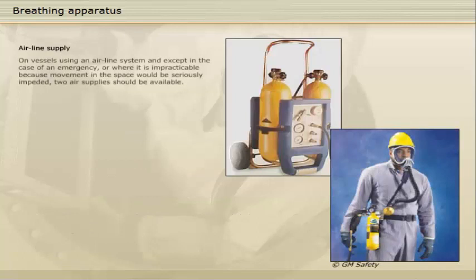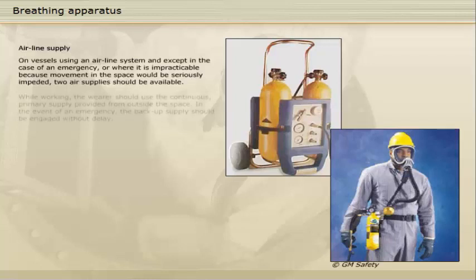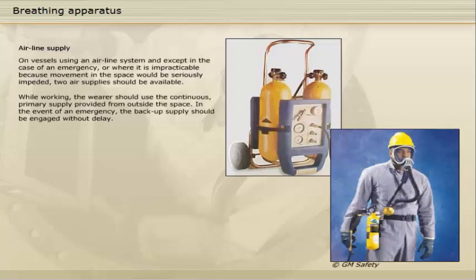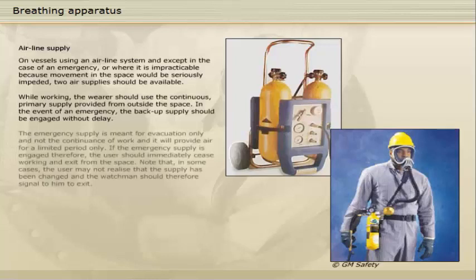On vessels using an airline system, and except in the case of an emergency or where it is impracticable because movement in the space would be seriously impeded, two air supplies should be available. While working, the wearer should use the continuous primary supply provided from outside the space. In the event of an emergency, the backup supply should be engaged without delay. The emergency supply is meant for evacuation only, and not the continuance of work, and it will provide air for a limited period only.